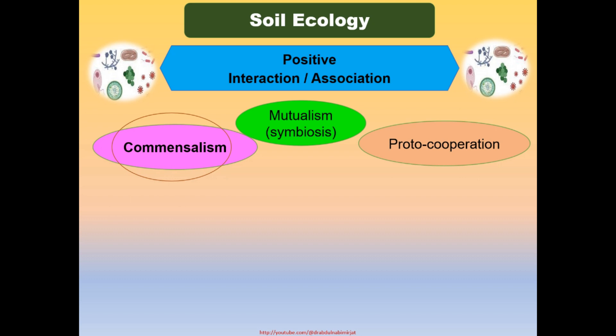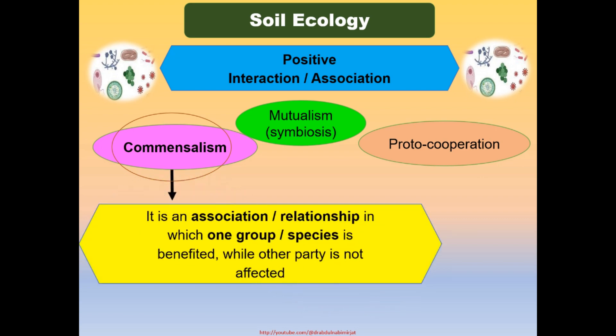Commensalism is an association in which one group or species is benefited while the other is not affected. Commensalism is mostly found in soil with respect to degradation of complex molecules like cellulose and lysine. For example, many soil fungi can degrade cellulose to glucose, and this product is then utilized by many soil bacteria which are unable to degrade cellulose and can only utilize fungal breakdown products such as glucose and other organic acids.